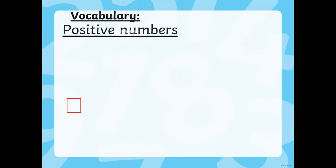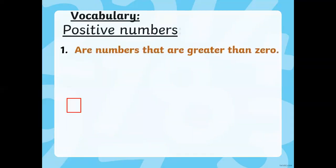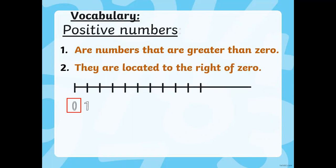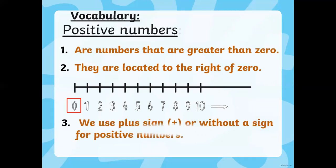Let's introduce first the vocabulary related to positive numbers. Positive numbers are numbers that are greater than zero and they are located to the right of zero. This is our zero and these are our positive numbers. We are very familiar with them because we use them in our daily life a lot — we know how this goes on from 10 to 20, from 20 to 30, and so on. We can write it with a plus sign, or sometimes we don't even write a sign and we still know it's a positive number. For example, we can write it as +8 or just 8 — they are both referring to positive numbers.